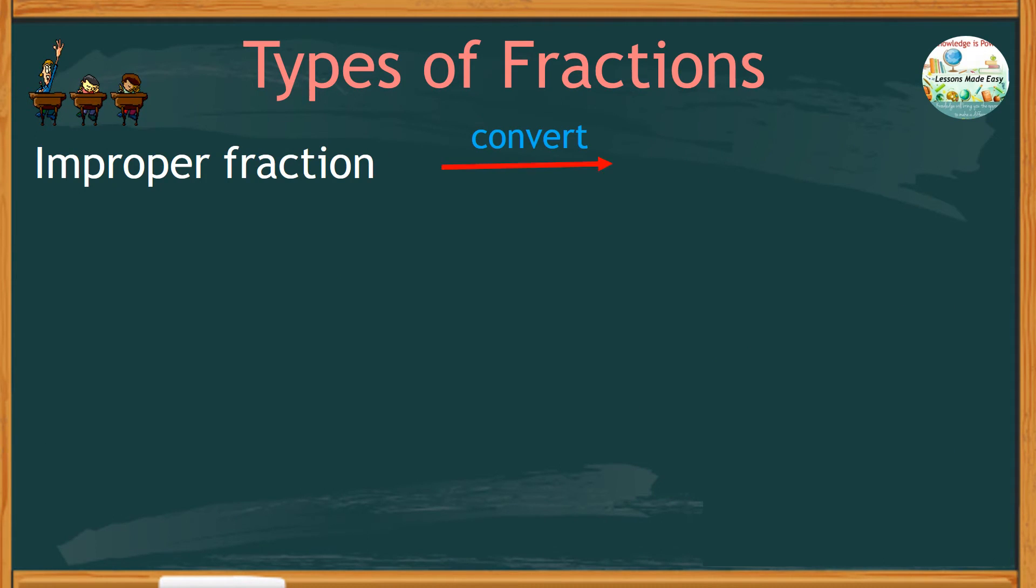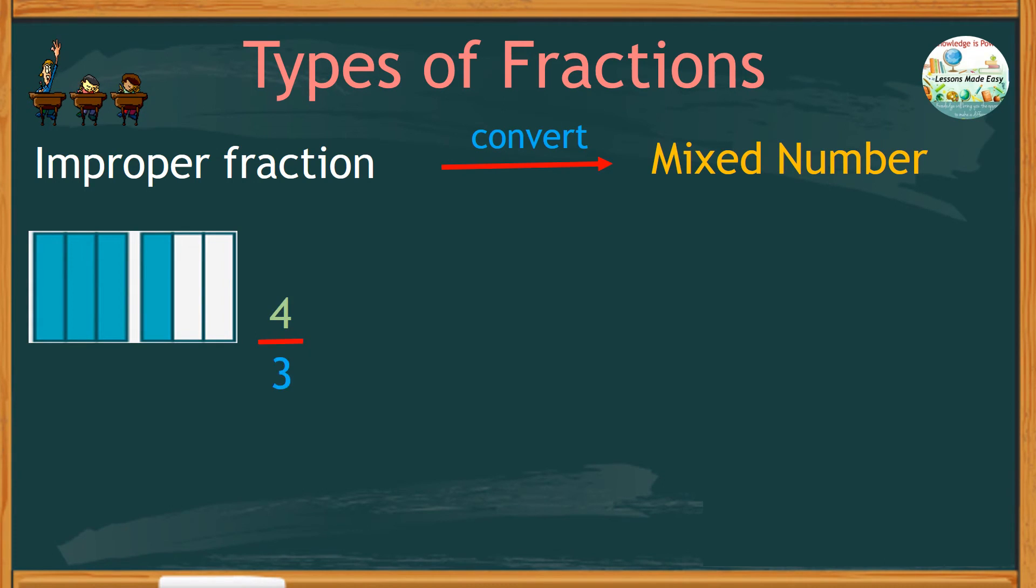An improper fraction can be converted into a mixed number. Let's look at the previous example, 4 over 3.